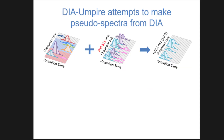DIA Umpire is probably the most widely used tool, but it wasn't the first — PLGS was another tool designed around this same concept about 10 years ago. The strategy here is to look at the precursor space, just like a normal precursor scan with retention time and MZ dimensions. You would come up with a list of precursors, and then for each one, look to see if there were any fragment ions that happened to line up with that precursor. If there were, you would pull them out and say they were part of a fragment space associated with that precursor — that becomes a new spectrum.